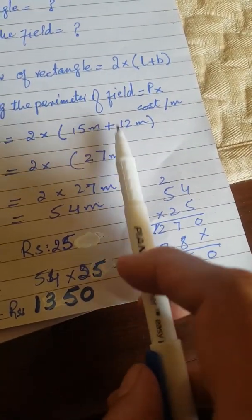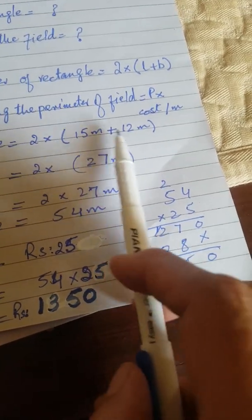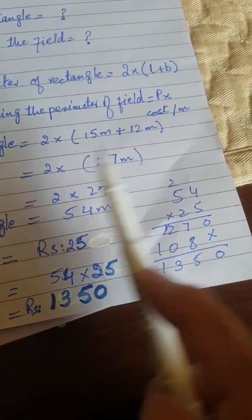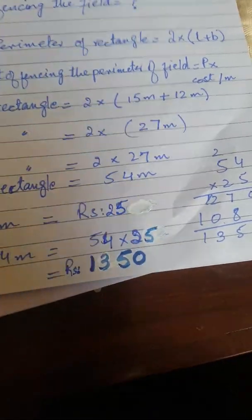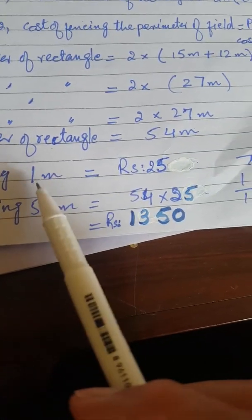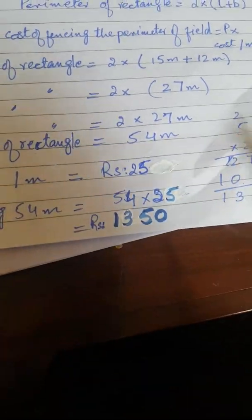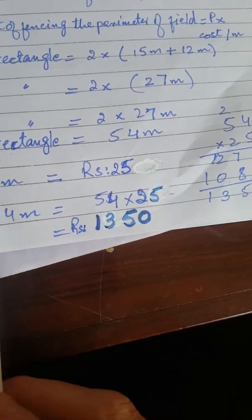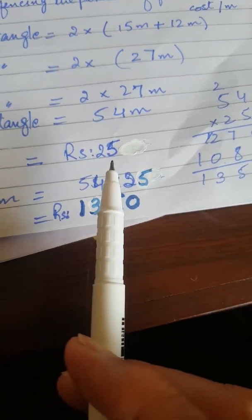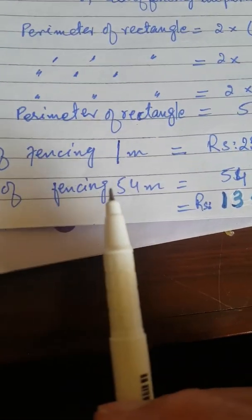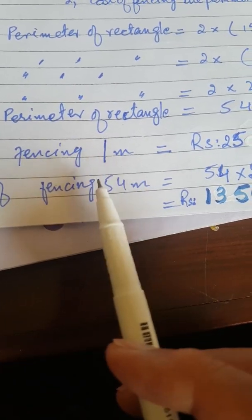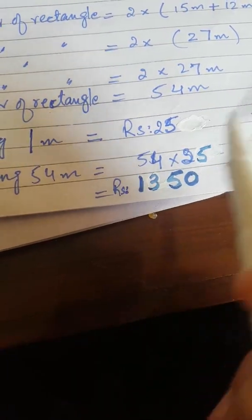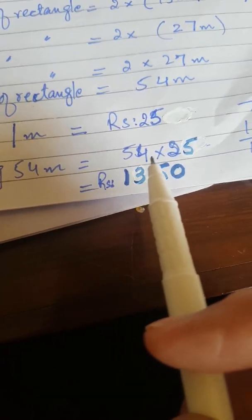You will do the addition first according to the DMAS rule, then multiply 27 by 2 to get the whole perimeter of the rectangle. The cost of fencing per meter — the slash means 'per meter' — is rupees 25 as given in the book. You have to find the cost of fencing for 54 meters, which is the perimeter of the rectangle.